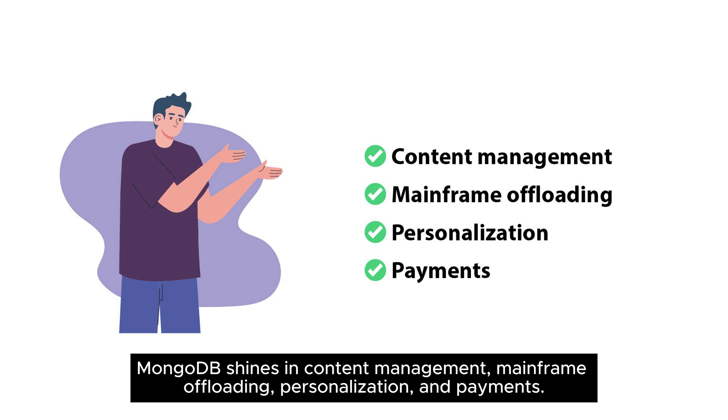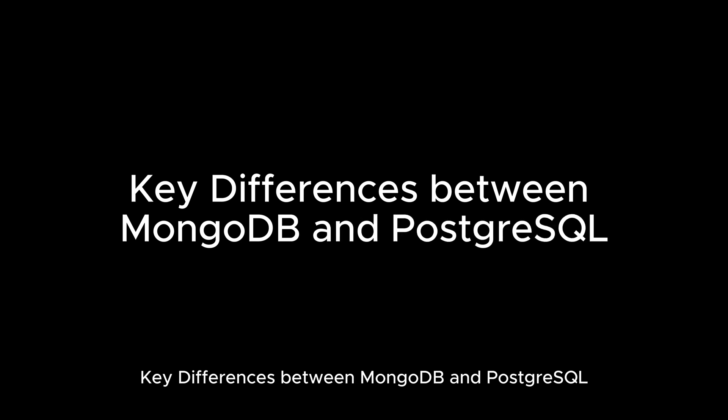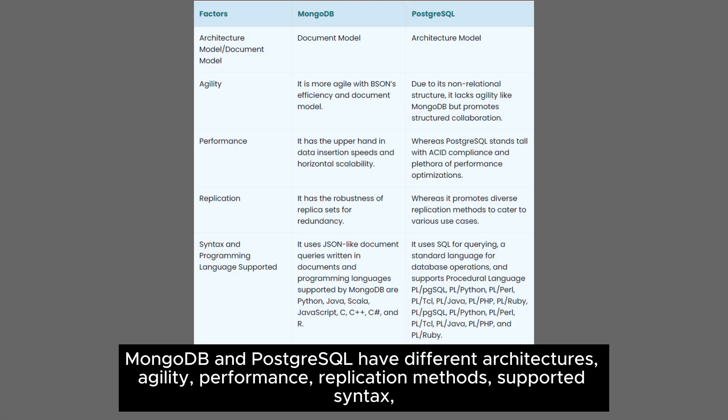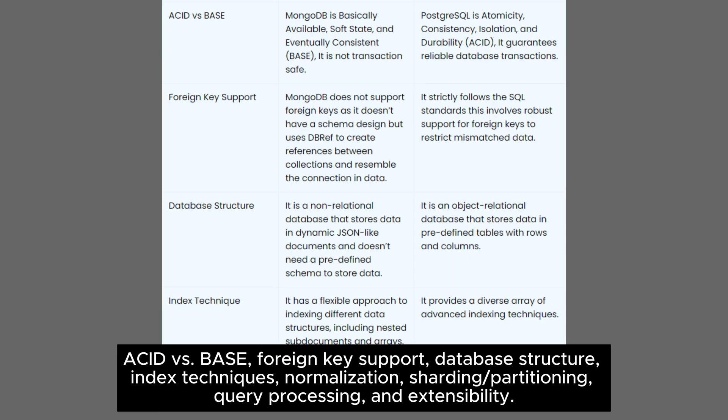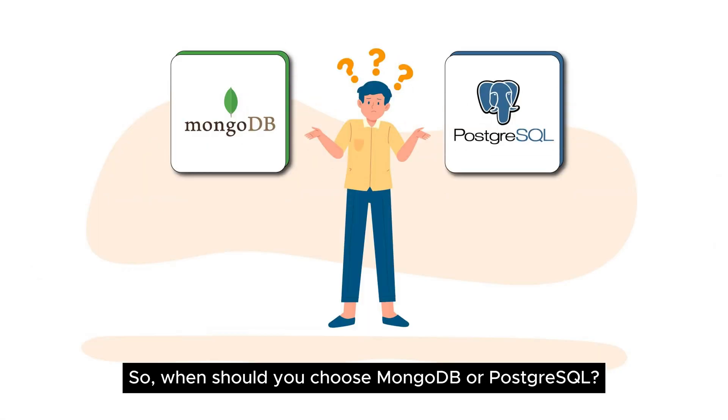Key differences between MongoDB and PostgreSQL include their architectures, agility, performance, replication methods, supported syntax, ACID versus BASE compliance, foreign key support, database structure, index techniques, normalization, sharding and partitioning, query processing, and extensibility.